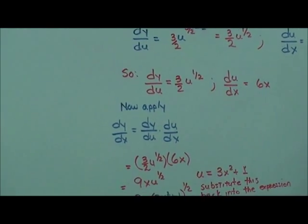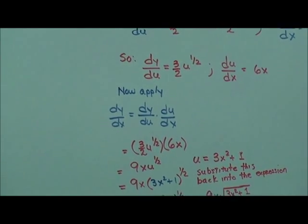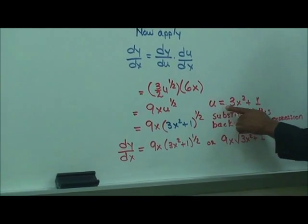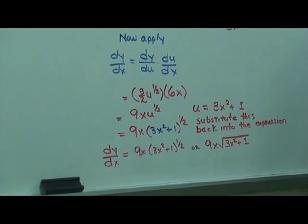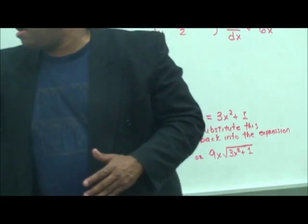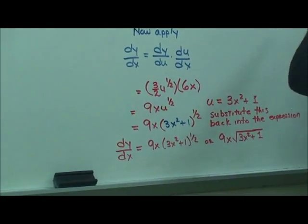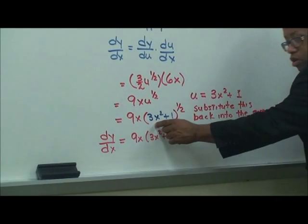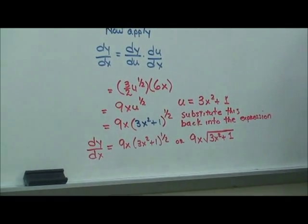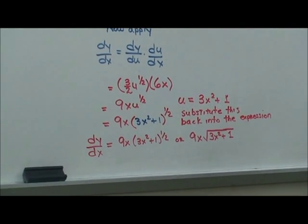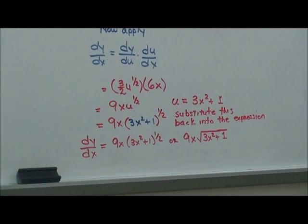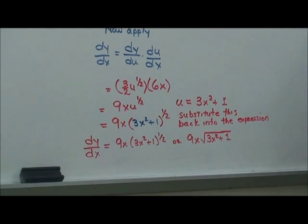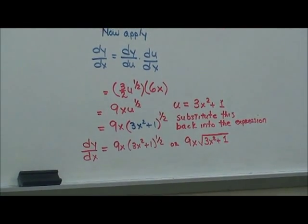Applying the chain rule, we multiply dy/du and du/dx together. Since u equals 3x squared plus 1, we plug that back in where u belongs in the expression. The final answer is 9x times (3x squared plus 1) to the 1/2 power — and anything raised to the 1/2 power is the square root — so: 9x times the square root of (3x squared plus 1).